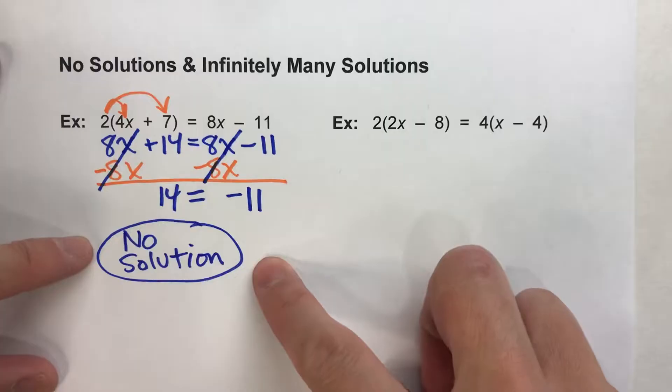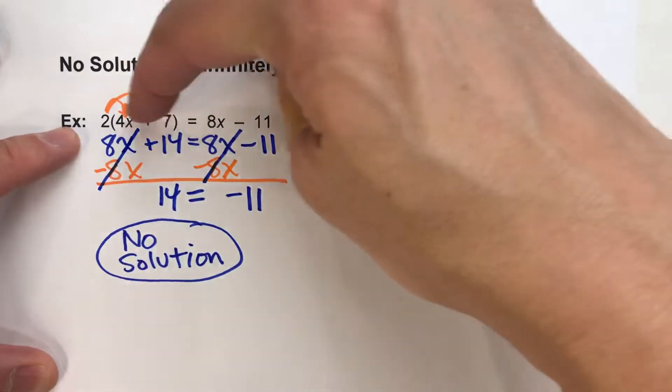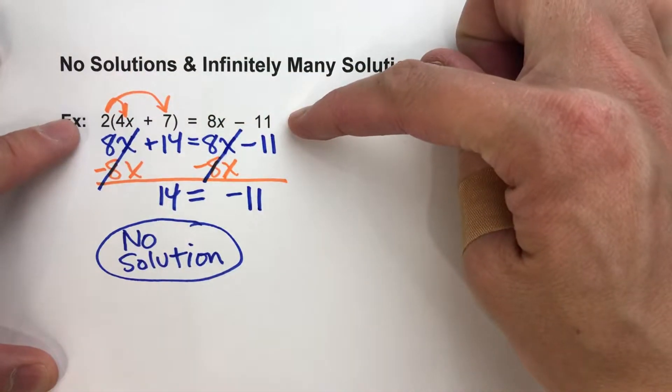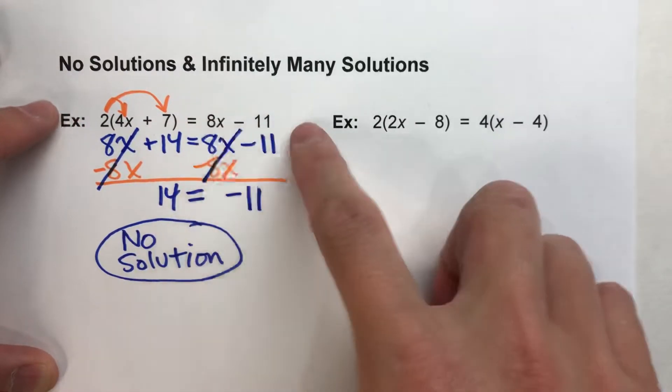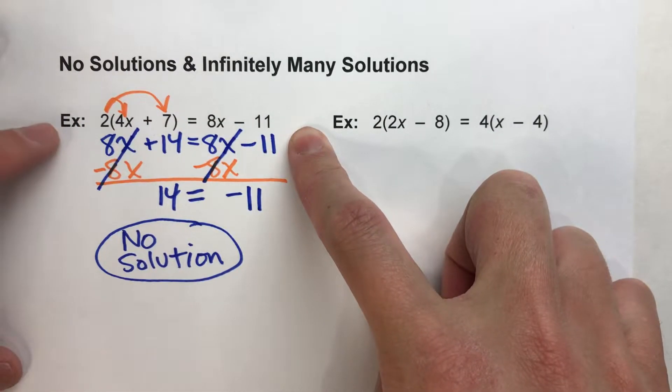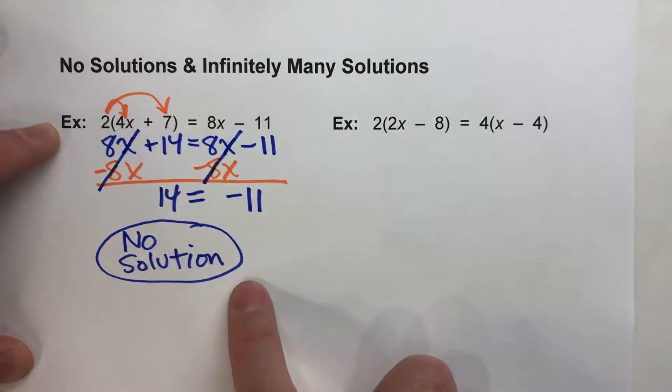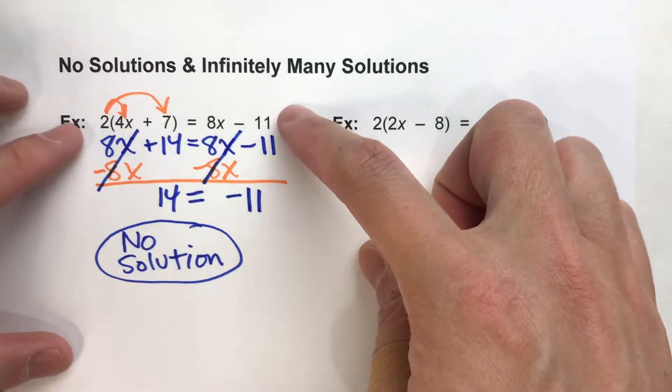So what that tells us is there is no solution to that original equation. In other words, there is no value of x that you can put into this equation so that this side of the equal sign would equal the other side of the equal sign. There is no possible number that will work for that equation.